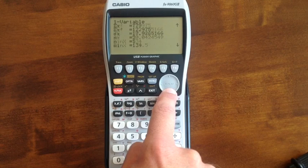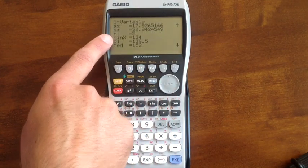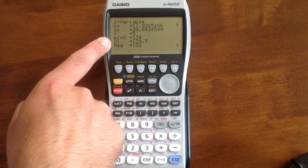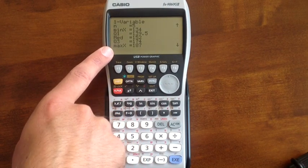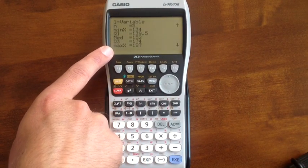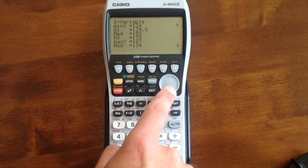So pressing the down button to scroll down, we get the minimum value for x, q1 the lower quartile, the median, the upper quartile, the maximum value of x. So it's giving us some of those statistics that we might want for box and whisker plots, for example.